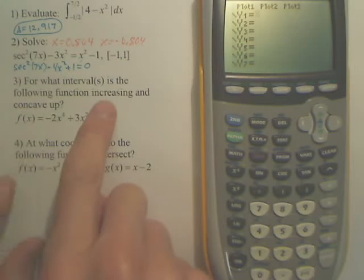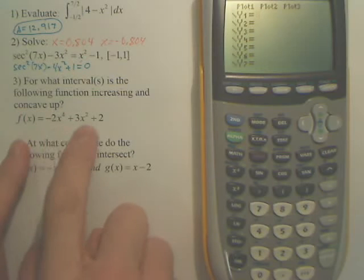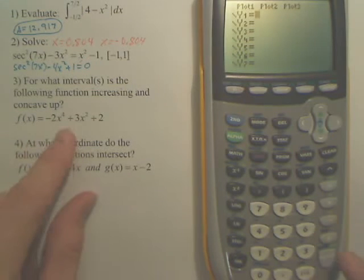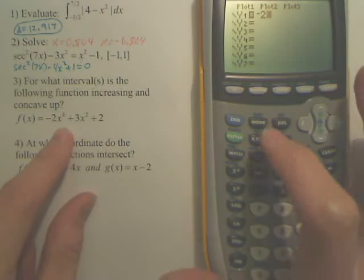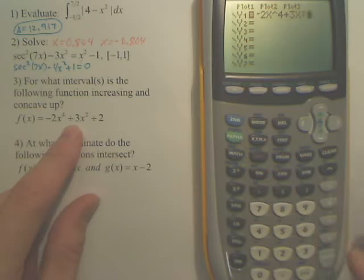Class, if I want to find, first of all, where it's increasing, then we're going to find concavity up. If I want to find where this is increasing, first we just type, it's a simple one, 2x to the 4th plus 3x squared plus 2.